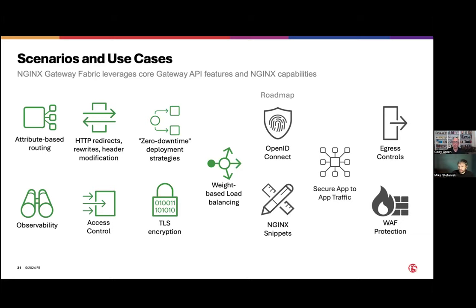And then secure app-to-app traffic: predominantly when we work with customers around service mesh, this is the number one feature they were leveraging — that automated encryption between service A and service B inside of the cluster to make sure traffic wasn't in clear text. But they had the overhead of trying to deploy Istio to do that, which is very powerful but also very complex to get up and going. If all you were looking for was MTLS, the Gateway API is going to be a much easier way to implement that as it becomes a first-class citizen API.